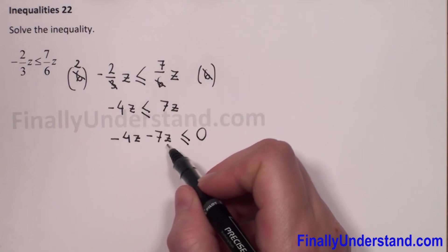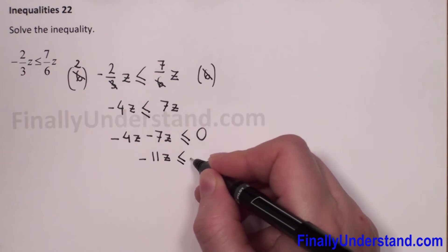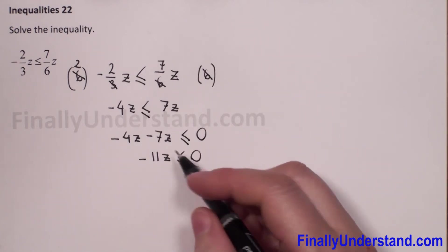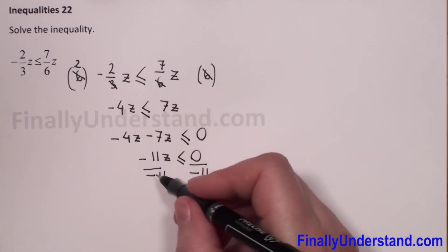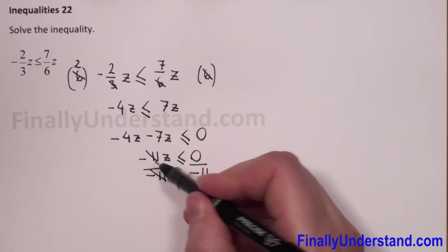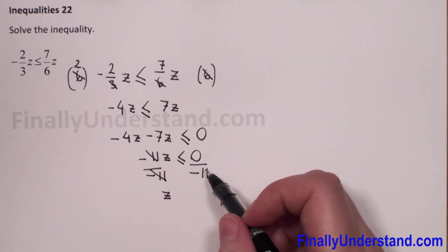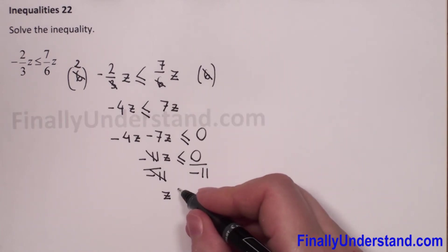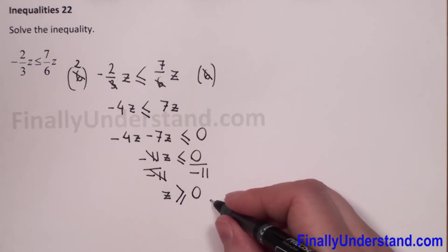Negative 4z minus 7z gives us negative 11z, which is less than or equal to zero. Now, to isolate z on the left side, I have to divide both sides by negative 11. The negative 11s cancel, giving us z. And always when we multiply or divide by a negative number, we have to change the direction of the inequality, so z will be greater than or equal to zero.